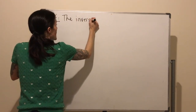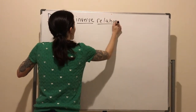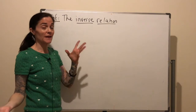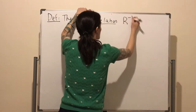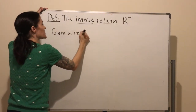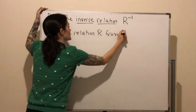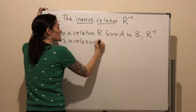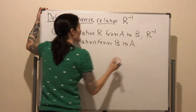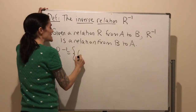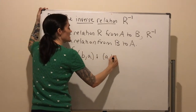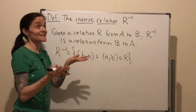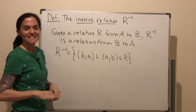There's one more thing I want to define today, and we will prove something about it: the inverse relation. This will really come up when we get into functions. Given a relation R from A to B, R inverse — the inverse relation — is a relation from B to A. As a set, this is all (B, A) such that (A, B) is in R. So you take every ordered pair in R and interchange the two coordinates.